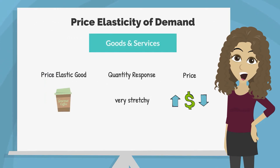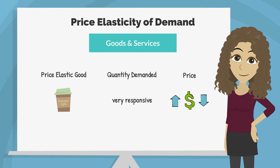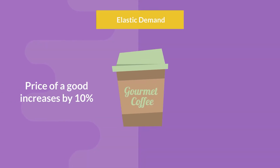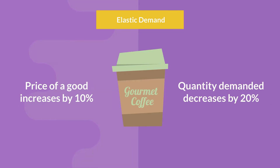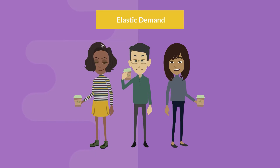A good that is price elastic has a very stretchy quantity response when there is a change in price. In economic terms, the quantity demanded is very responsive when there is a change in the price of that good. If the percent change in the quantity demanded is greater than the percent change in the price, economists label the demand for the good as elastic — quantity demanded changes a lot relative to the change in price. It's stretchy. For example, if the price of a good increases by 10 percent and the quantity demanded decreases by 20 percent, that good is said to have elastic demand. Consumers are considered sensitive, or responsive, to a change in the price of that good.